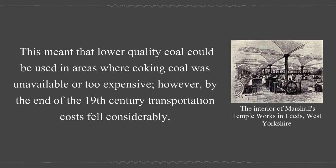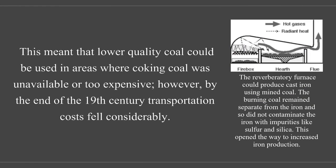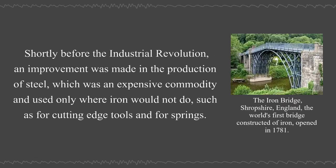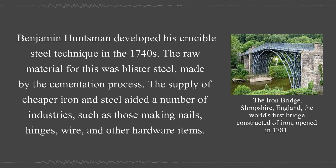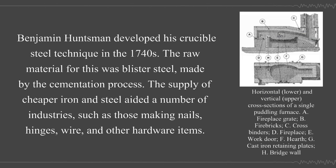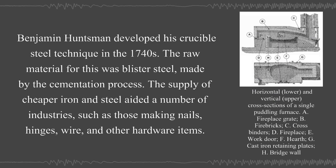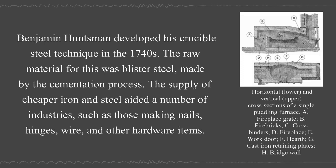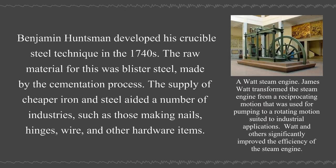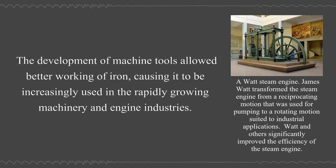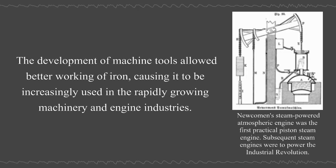Shortly before the Industrial Revolution, an improvement was made in the production of steel, which was an expensive commodity used only where iron would not do, such as for cutting-edge tools and springs. Benjamin Huntsman developed his crucible steel technique in the 1740s, with the raw material being blister steel made by the cementation process. The supply of cheaper iron and steel aided a number of industries such as those making nails, hinges, wire, and other hardware items. The development of machine tools allowed better working of iron, causing it to be increasingly used in the rapidly growing machinery and engine industries.